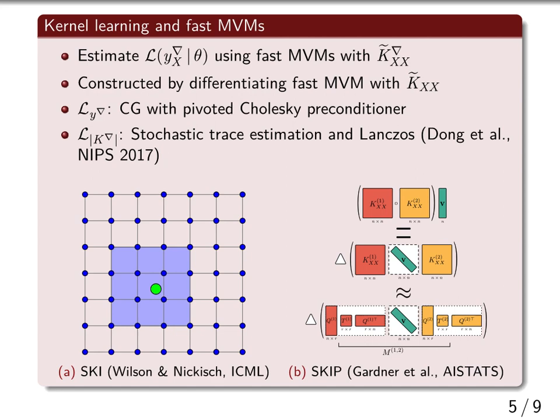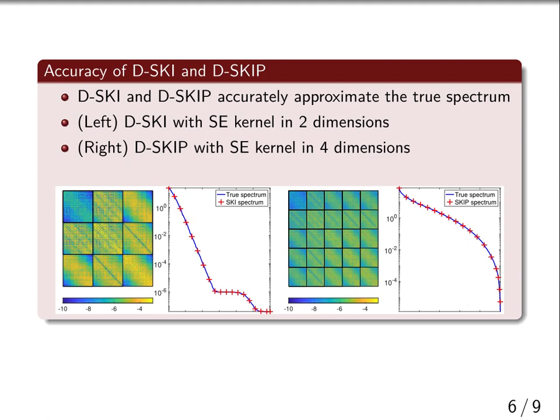Our fast-MVMs have a small approximation error, and you can see below that they match both the original matrix and the spectrum of the true kernel.